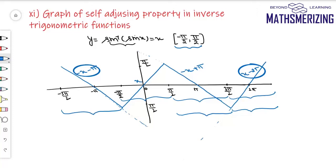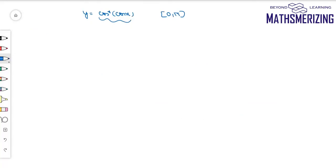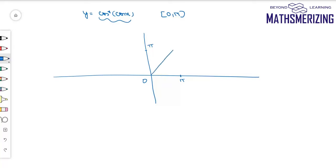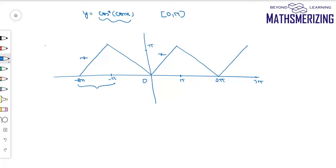In the same way I can draw the graph of cos⁻¹(cos x). The principal value range of cos inverse is from 0 to π. I mark this interval, draw the y = x line, then draw the zigzag lines. I mark points π, 2π, 3π, −π, −2π. Between −2π and −π it is x + 2π; between −π and 0 it is −x; between π and 2π it is −x + 2π; and between 2π and 3π it is x − 2π.